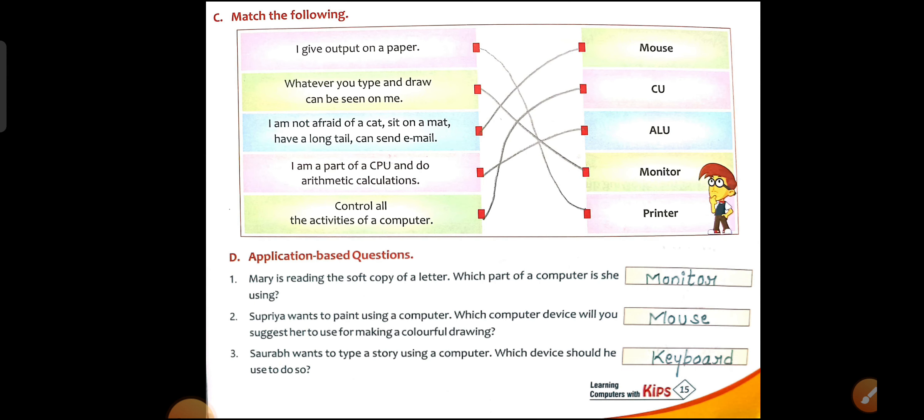Now we will do Match the Following. First point: I give output on paper — I print on paper. The answer is Printer. A printer is an output device that helps us print data on paper.